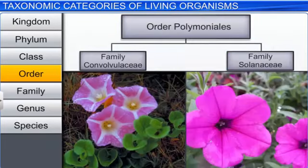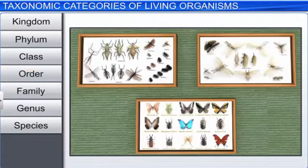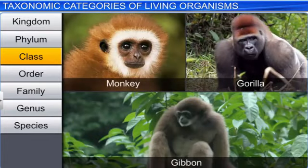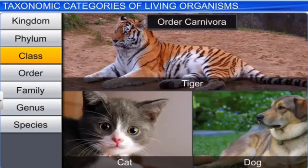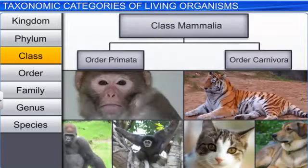While plant families like Convolvulaceae and Solanaceae are included in the order Polemoniales on the basis of floral characters. The next category is Class, which consists of related orders. Consider the two orders Primata and Carnivora. Order Primata includes the monkey, the gorilla, and the gibbon. While order Carnivora includes animals like the tiger, the cat, and the dog. Although these two orders are different, they are classified under the class Mammalia.